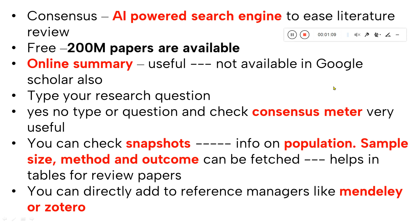You can filter papers based on your needs. They have different options — you can get an online summary, just a few lines, plus something called a consensus meter. When you type a yes-or-no type of question, it tells you how many papers say yes and how many say no, giving you a basic idea of whether a particular research direction is supported.